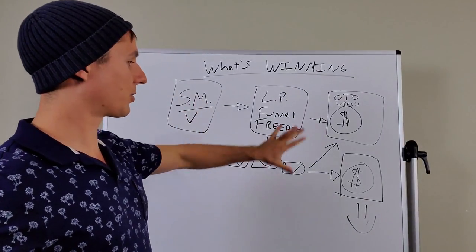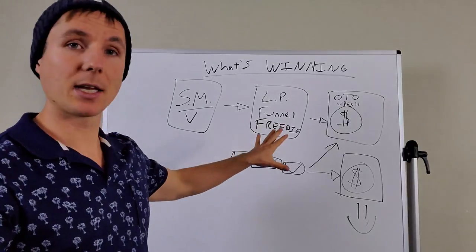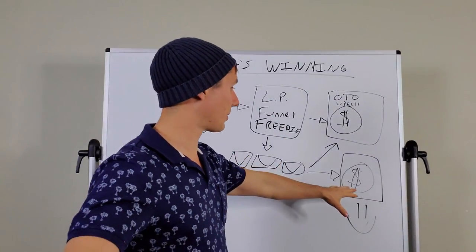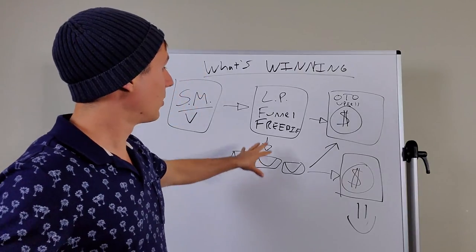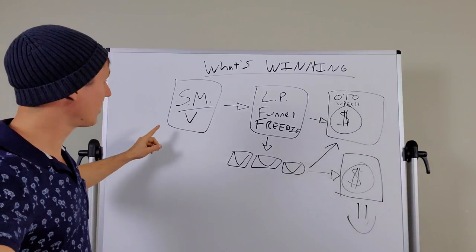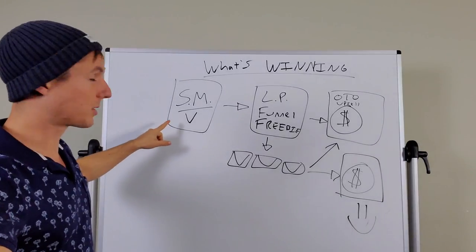Now one thing I want to show you, I mean I've showed you the big picture now of what's winning, but you might be wondering, Ted, what's the most important part of this? If I was just to master one thing, what would it be? Would it be the offer? Would it be the email sequences? Would it be the funnel or would it be the social media value?